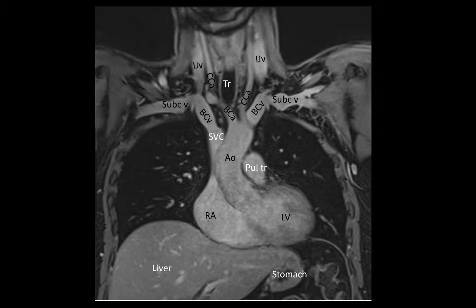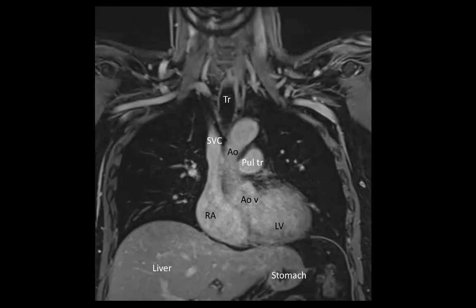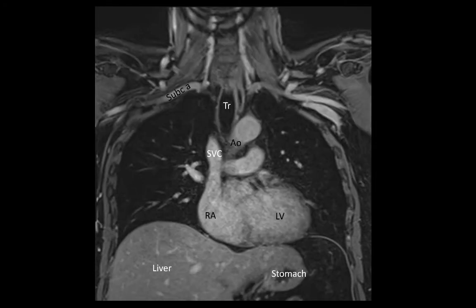Looking again at the heart, we can see the aortic semilunar valve. The right subclavian artery, which had occupied a position posterior to the subclavian vein, is now in view. Now we see the left subclavian artery. The branching of the pulmonary trunk into left and right pulmonary arteries is now also evident, and just lateral to the superior vena cava we can see the right pulmonary vein.